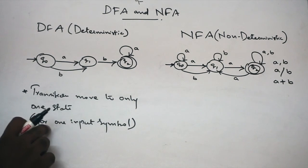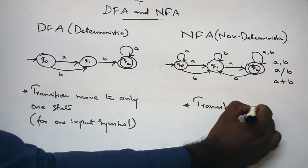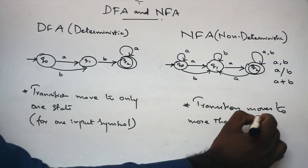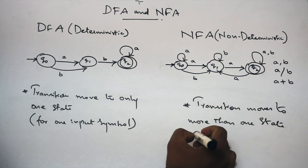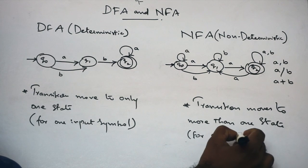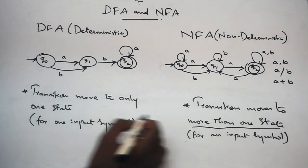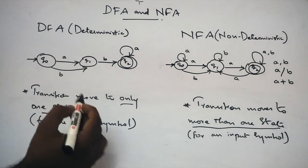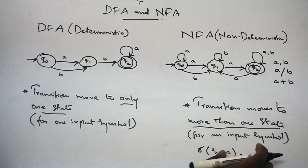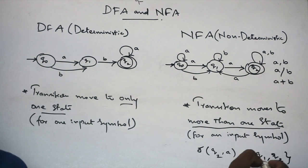For one input symbol, the transition moves to only one state — that is DFA. For NFA, M suffix N is non-deterministic. That is: states, alphabets, transition function, initial state, final state. So here, transition moves to more than one state. Only one state is DFA — so easy.